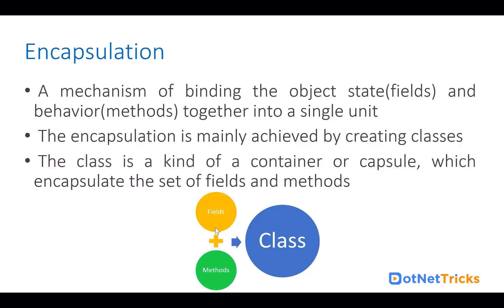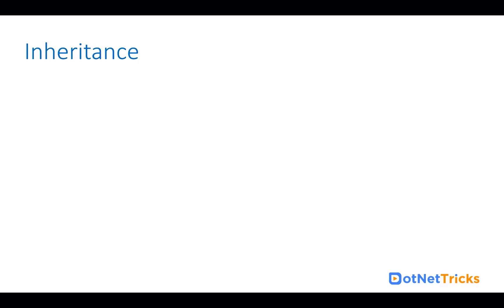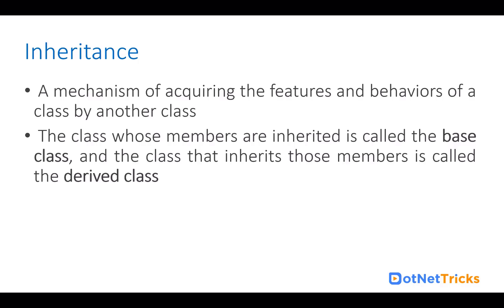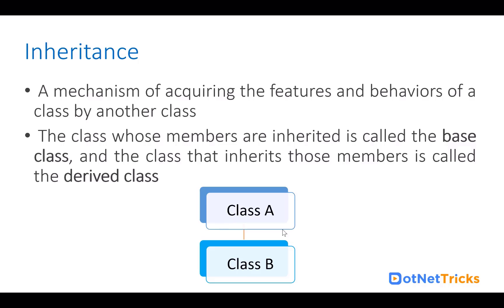As you can see in this diagram, when we create a class, we create its fields and its methods — these two things combine together to make a class. Next we have inheritance. Inheritance is a mechanism of acquiring the features and behavior of a class by another class. The class whose members are inherited is called the base class, and the class that inherits those members is called the derived class. In this case, class A is called the parent class or base class, and class B is called the derived class or child class.